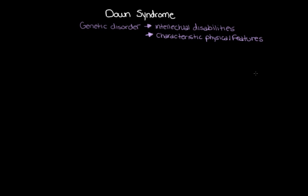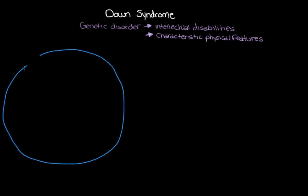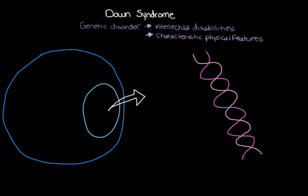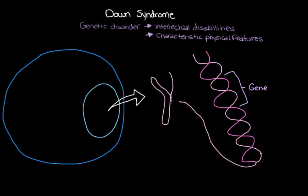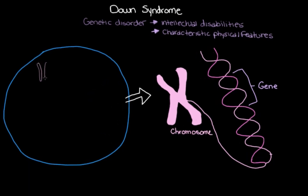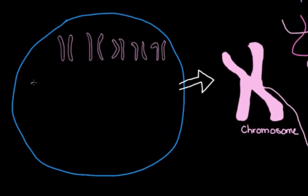Let's draw a cell and head into the nucleus, where we can find the DNA. Little segments of DNA make up genes, and it's genes that give the instructions for how to make all of the components of our body. This DNA ends up being packed up into structures that we call chromosomes, so all of these different chromosomes have different bits of DNA — different genes within them.